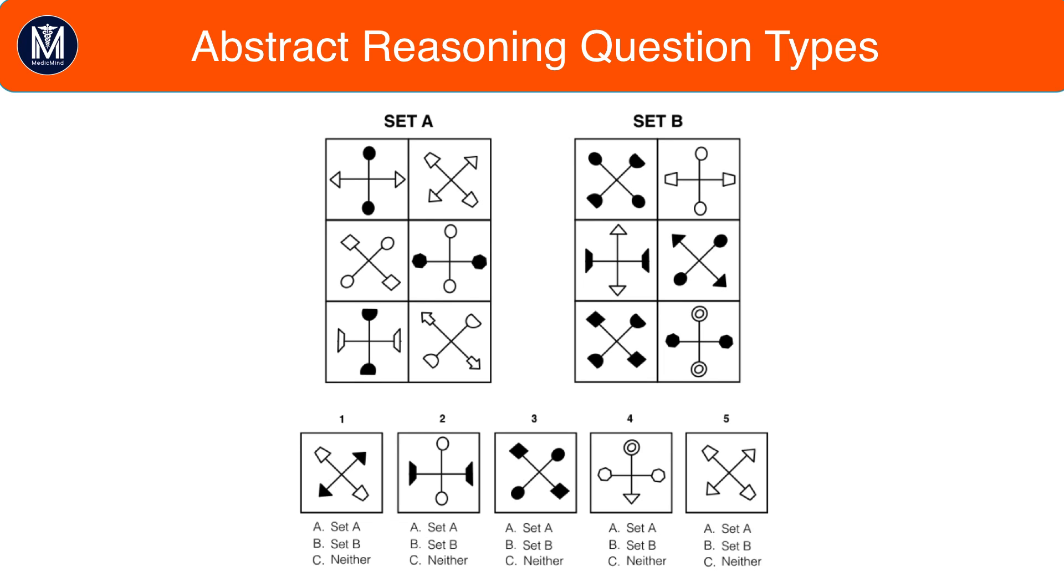Then, once you've spotted the pattern, you'll go through each test box and choose either A, B, or C. If it fits into set A, you choose A. If it fits into set B, you choose B. And if it fits into neither, you choose C. However, if the test box fits into both A and B, then you choose neither as well. So to summarize, set A for A, B for B, and C for either neither or both.